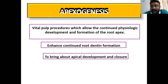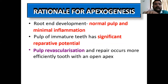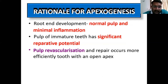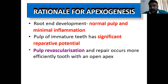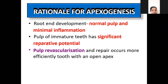Apexogenesis enhances continued dentin formation and brings about apical development and closure, where normal apical foramen closure will also be normal. The rationale for doing apexogenesis is that whatever grows by itself will be much better than what we induce. The pulp of immature teeth has significant reparative potential — young permanent tooth pulp has more blood supply, so reparative and regenerative capacity is much greater compared to mature teeth. Prevascularization and repair occur more efficiently.